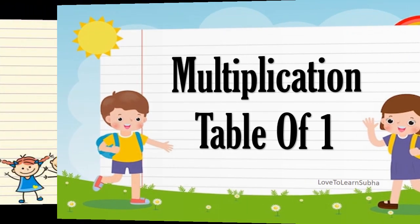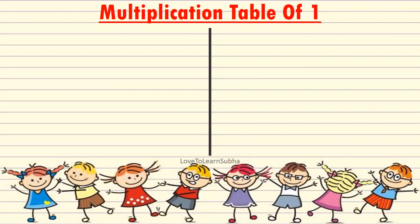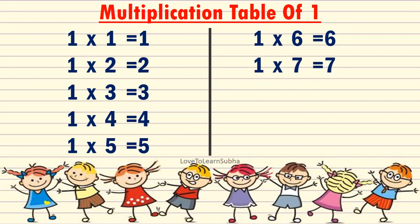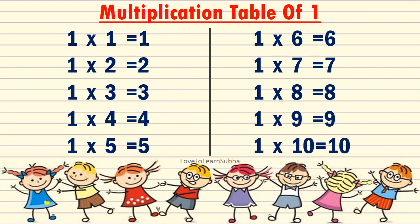1 1s are 1, 1 2s are 2, 1 3s are 3, 1 4s are 4, 1 5s are 5, 1 6s are 6, 1 7s are 7, 1 8s are 8, 1 9s are 9, 1 10s are 10.